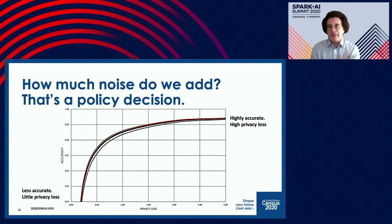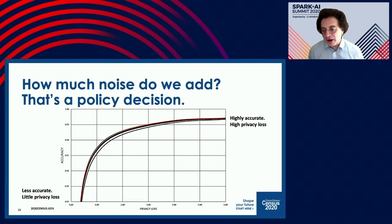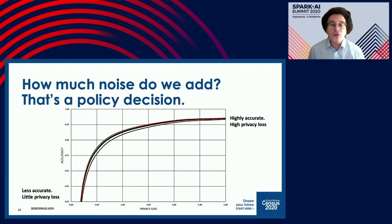The question is how much noise should we add — that's really a policy decision. If we add a little bit of noise, we get highly accurate data but there's high privacy loss. If we add a lot of noise, there's less privacy loss but the data is less accurate.